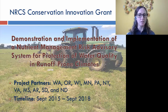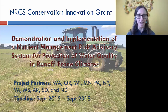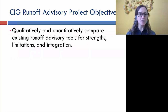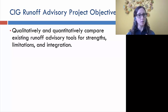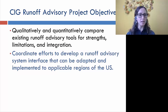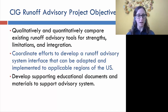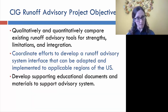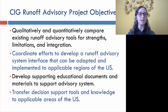There is quite a large list of project partners participating in various ways, and we're hoping by September 2018 to have something to show. The objectives are to quantitatively and qualitatively compare the existing runoff advisory tools for their strengths, limitations, and integration; to develop a runoff risk advisory system interface adaptable to applicable regions of the U.S.; and to develop supporting educational documents and transfer those tools to applicable areas.